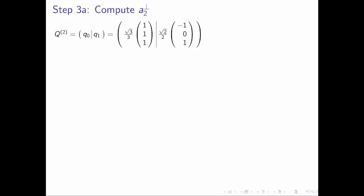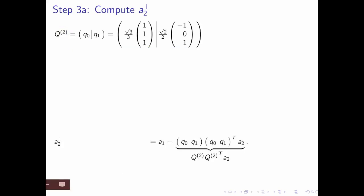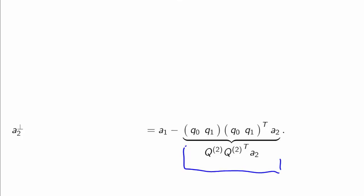So what did we just observe? The blue plane in the animation was really the column space of the matrix with columns q0 and q1 — that's q^2. What we want to do is project a2 onto the column space of q^2. The formula for that is given here. Then we want to subtract out that component, leaving us with the component that is orthogonal to both q0 and q1, and therefore the space spanned by q0 and q1.